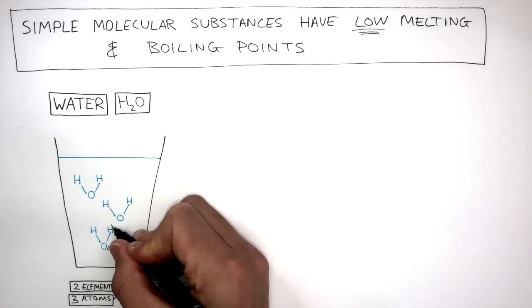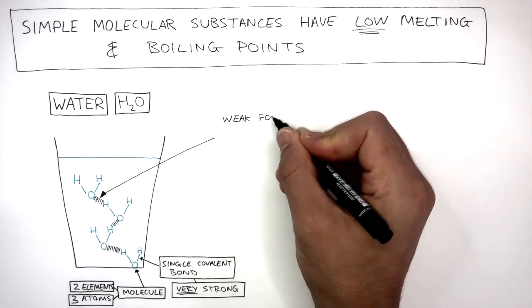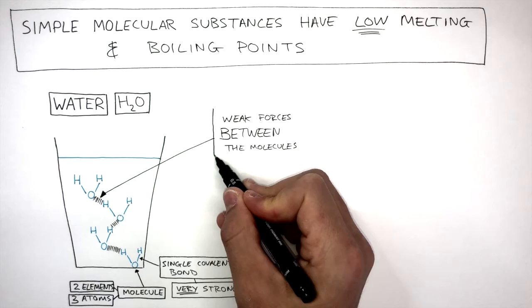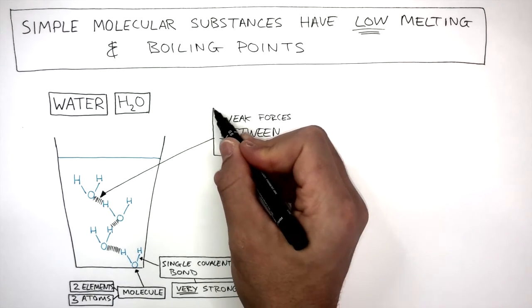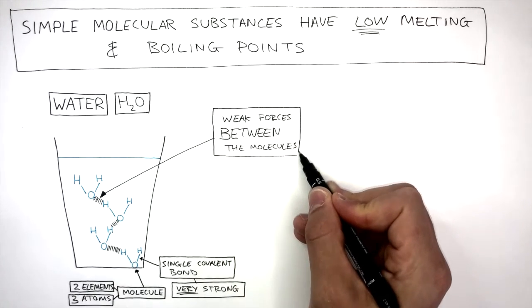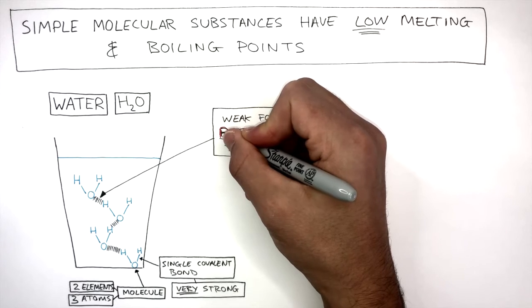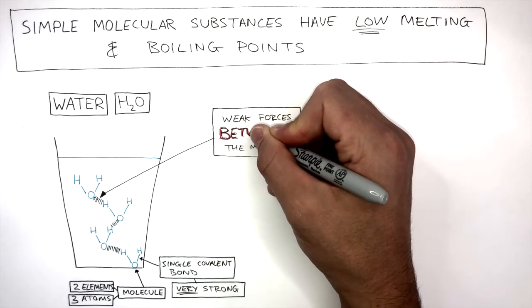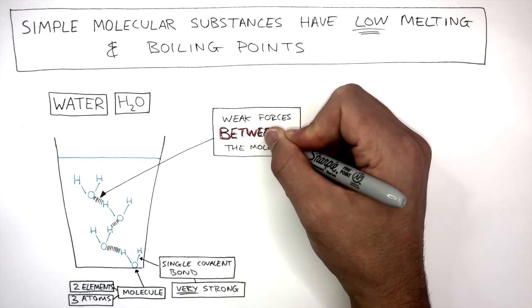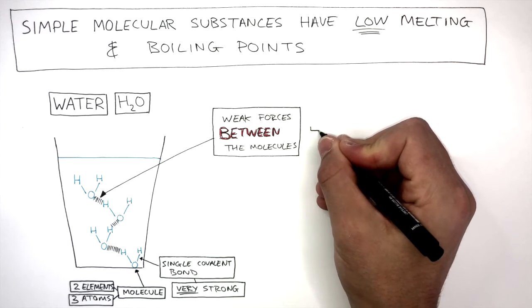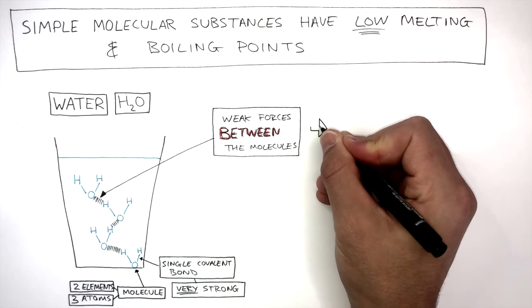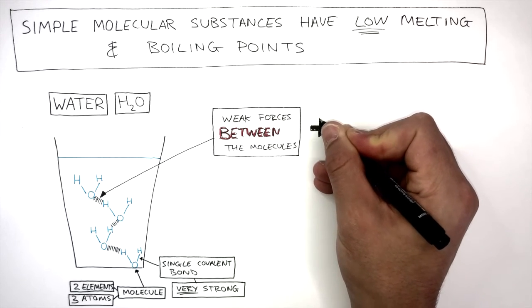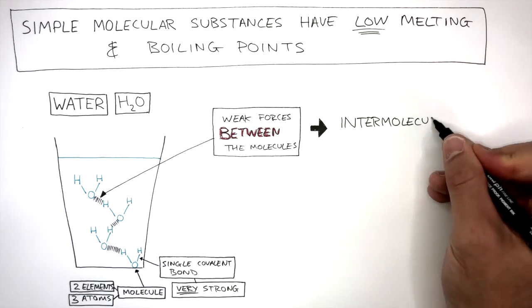Between simple molecular substances, there are weak forces between the molecules. When talking about these weak forces, it's really important you use the word between. This is so you can tell the examiner that these forces are between the molecules and not within the molecule. The weak force of attraction between two simple molecular substances has a special name. It is known as an intermolecular force.